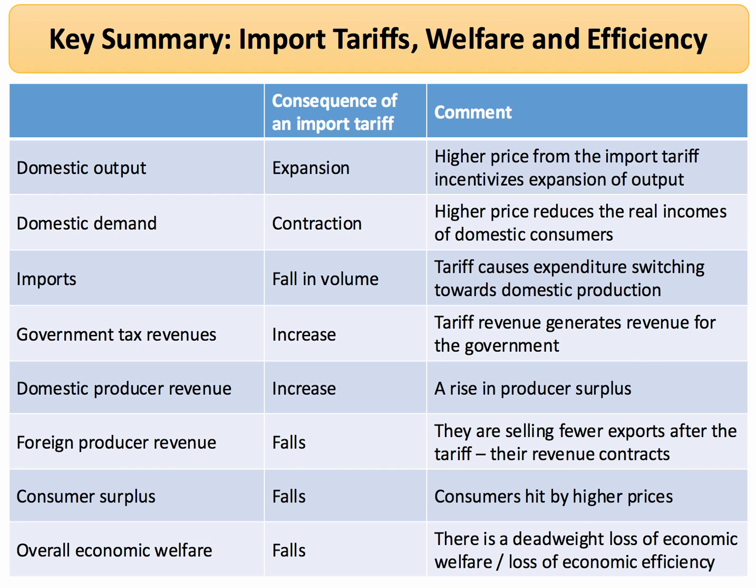The tariff is a kind of expenditure switching policy which favors domestic producers. Governments are better off in the sense that they get more revenue from the tariff, and may get some more revenue from extra employment in the domestic steel industry, for example, though they may lose some revenue elsewhere. Domestic producers are better off — they get more producer surplus. Foreign producers are worse off, as the industries subjected to the tariff will be selling fewer goods into the overseas market. Consumers are worse off — their consumer surplus falls because the price is higher.